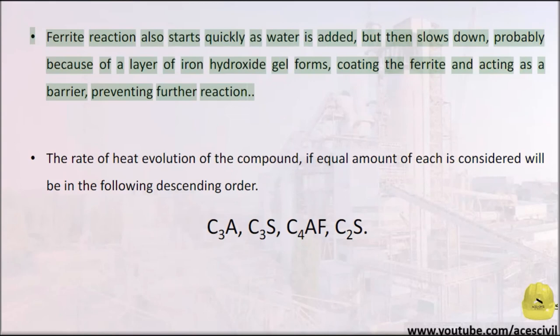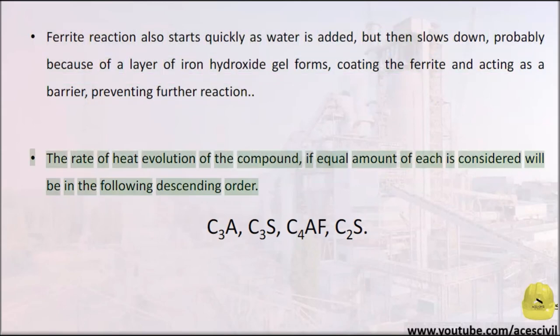Ferrite reaction also starts quickly as water is added, but then slows down, probably because a layer of iron hydroxide gel forms coating the ferrite and acting as a barrier, preventing further reaction. The rate of heat evolution of the compounds, if equal amounts of each are considered, will be in the following descending order: C3A > C3S > C4AF > C2S.